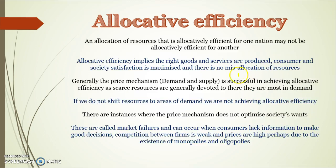When we're looking at allocative efficiency, it may not be the same for all nations — it depends on what society values. An allocatively efficient allocation of resources may be different for different countries, but it implies that the right goods and services are being produced and consumers' and society's satisfaction is maximised. Generally, the price mechanism is quite good at doing this because scarce resources will go to where they're in demand.